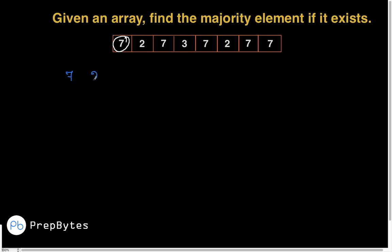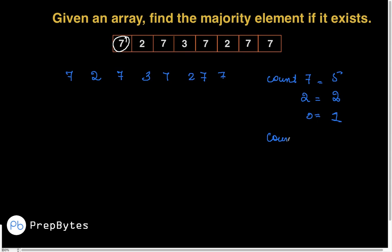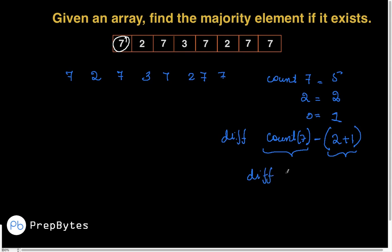Consider the array [7, 2, 7, 3, 7, 2, 7]. The count of 7 is 5, count of 2 is 2, count of 3 is 1. If we subtract the count of all non-majority elements from the count of the majority element, we get a non-zero positive result. So if I traverse the array, incrementing a count for the majority element and decrementing for non-majority elements, the count will be greater than 0 if a majority element exists.